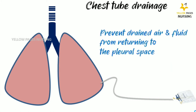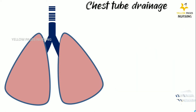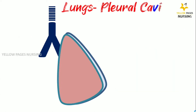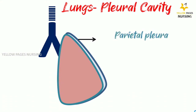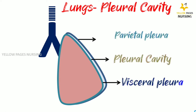Here you can clearly visualize the membranes of the lungs: the parietal pleura, the pleural cavity, and the visceral pleura.